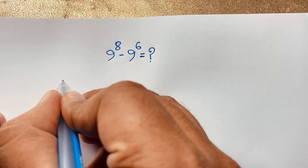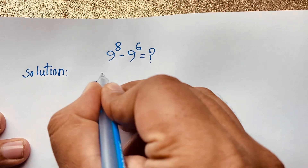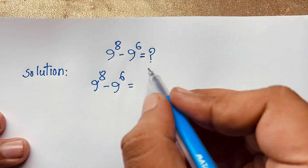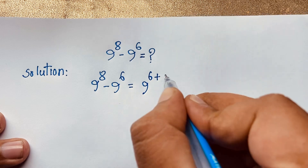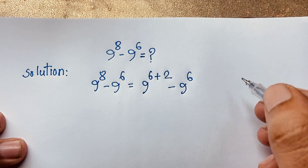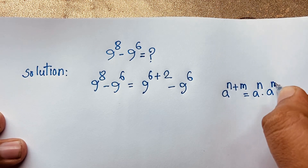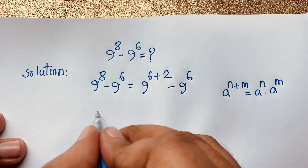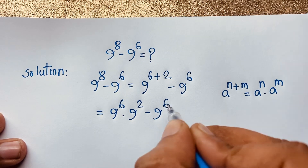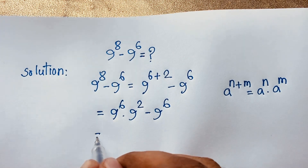Now let's look at the solution. Our question is 9 to the power 8 minus 9 to the power 6. We can write 9 to the power 8 as 9 to the power 6 plus 2, minus 9 to the power 6. We know that 6 plus 2 equals 8. Using the exponential law — a to the power n plus m equals a to the power n times a to the power m — this expression becomes 9 to the power 6 times 9 to the power 2, minus 9 to the power 6. You can see that 9 to the power 6 is common in both terms.